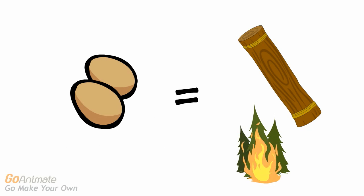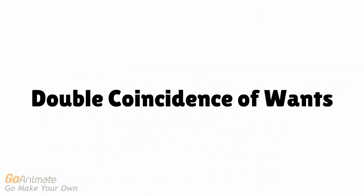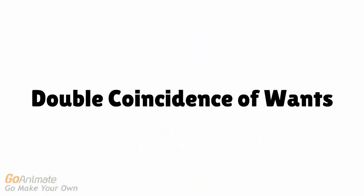Although this seems perfectly fine, barter has a disadvantage which economists call the double coincidence of wants. To put it plainly, this means that to barter, you must find someone who has what you want and wants what you have. This obviously limits trade tremendously.